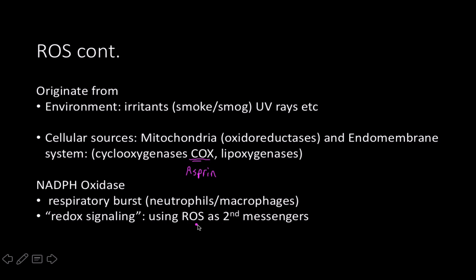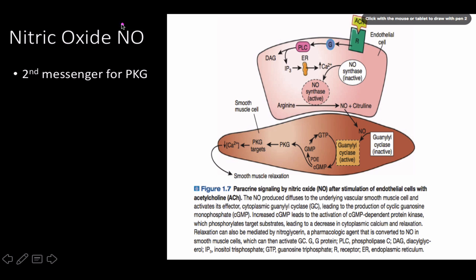NADPH oxidase is one of the very well understood forms of redox signaling, where a reactive oxygen species is used as a second messenger. If you remember the immunology videos, respiratory burst is a phenomenal mechanism by which neutrophils and macrophages get the job done — more common in neutrophils, which have a shorter lifespan. Nitric oxide is one of the most important signaling cascades for understanding how we regulate blood flow locally.